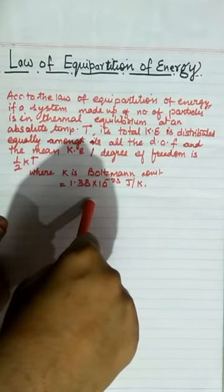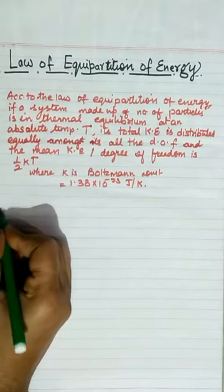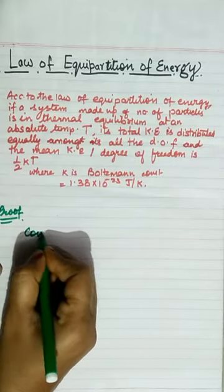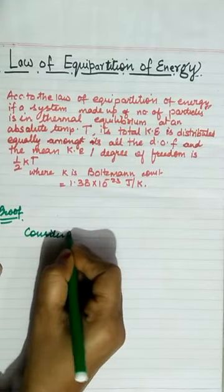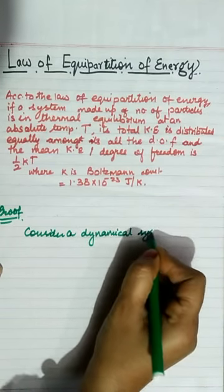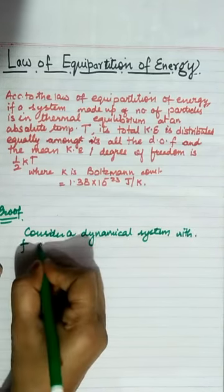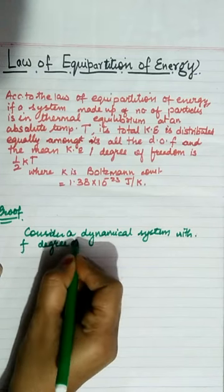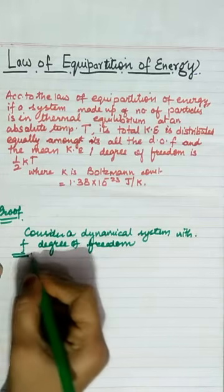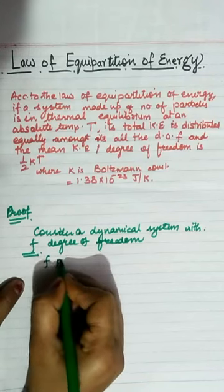Now we will do the derivation using statistics. For the proof, we consider a dynamical system in which there are F degrees of freedom. This means we will have F position coordinates to define the system.